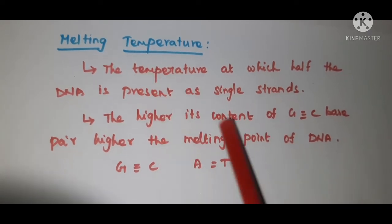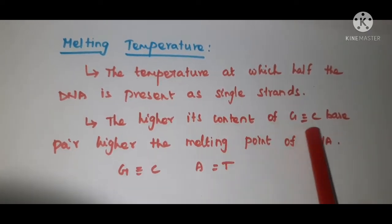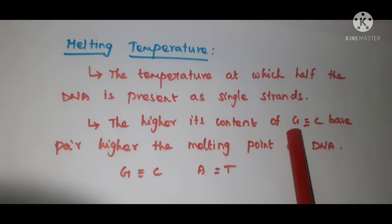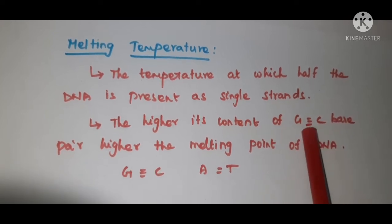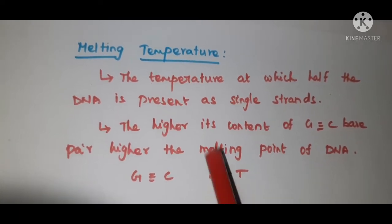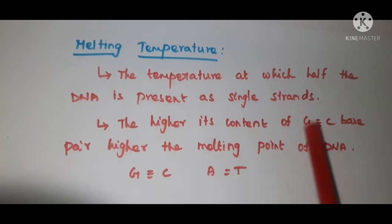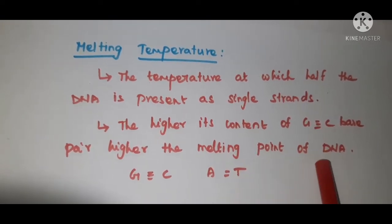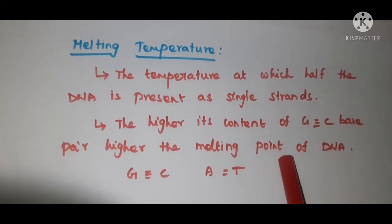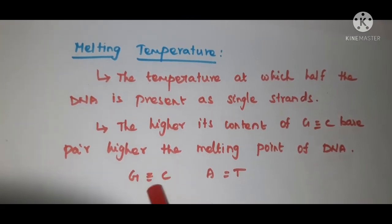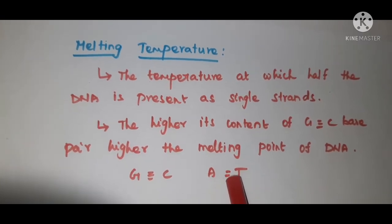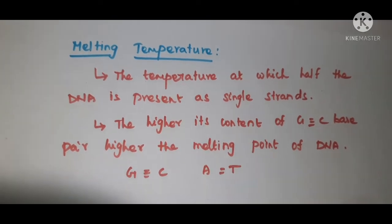This melting temperature mainly depends upon the content of GC base pairs. In double-stranded DNA, guanine is always base paired with cytosine with 3 hydrogen bonds, and adenine is always base paired with thymine with 2 hydrogen bonds. So, the higher the content of GC base pairs, the higher the melting temperature of DNA. This is because it requires more heat to dissociate 3 hydrogen bonds compared to the AT base pair, which has only 2 hydrogen bonds.